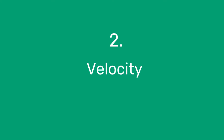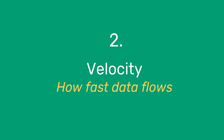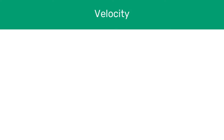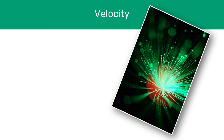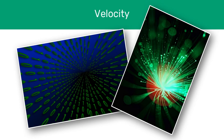Our second keyword is velocity, which relates to the speed at which data flows. For big data, this is usually rapid and continuous and would overload normal systems. Not only is velocity related to the speed of data generation, it's also to do with users wanting the data in almost real time.